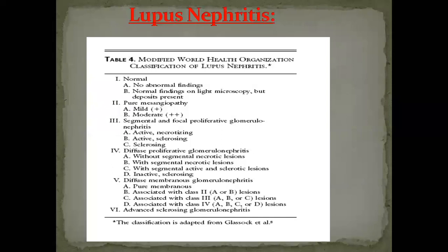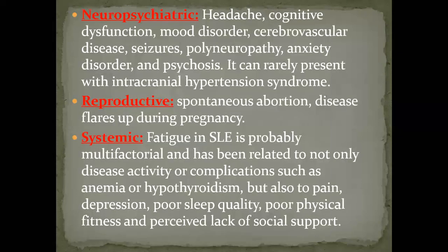Lupus nephritis is a very important entity. The WHO classification grades lupus nephritis from class one (minimal mesangial) to very advanced sclerosing glomerulonephritis. In medical practice, many patients in nephrodialysis units and among renal transplant recipients have lupus as an underlying cause.